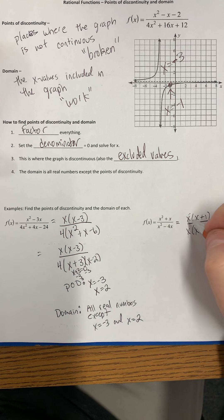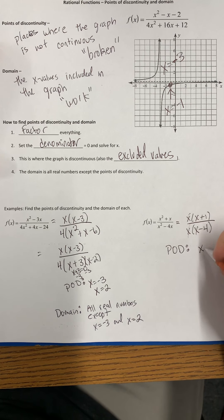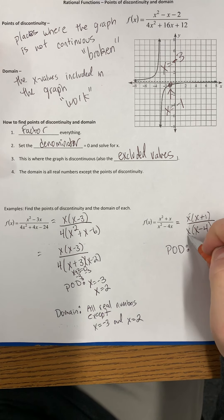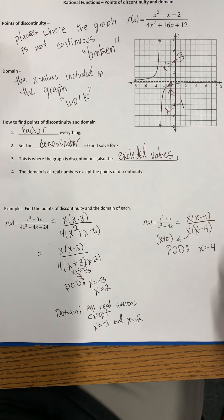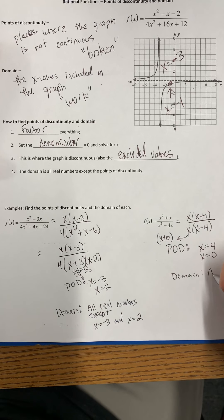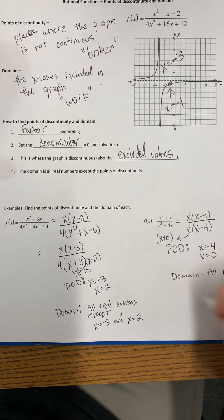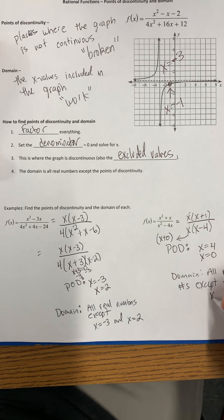So we get two points of discontinuity in this case. The one obvious one is the x minus 4, that's x equals 4. But then we see this x—this x implies that it's really like x plus 0 if we want to look at it that way, so x equals 0 would be our other point of discontinuity. Our domain would be all real numbers except the two points of discontinuity. In this case, x equals 4 and x equals 0.